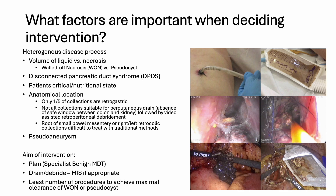Whether there is disconnected pancreatic duct syndrome, or DPDS, and the patient's critical and nutritional state. The anatomical location is also important. Only one-fifth of collections are retrogastric. Not all collections are suitable for percutaneous drainage, such as absence of a safe window between the colon and kidney, followed by video-assisted retroperitoneal debridement. The root of the small bowel mesentery, or right-left retrocolic collections, are difficult to treat with traditional methods. And the last factor to think about is the presence of a pseudoaneurysm.